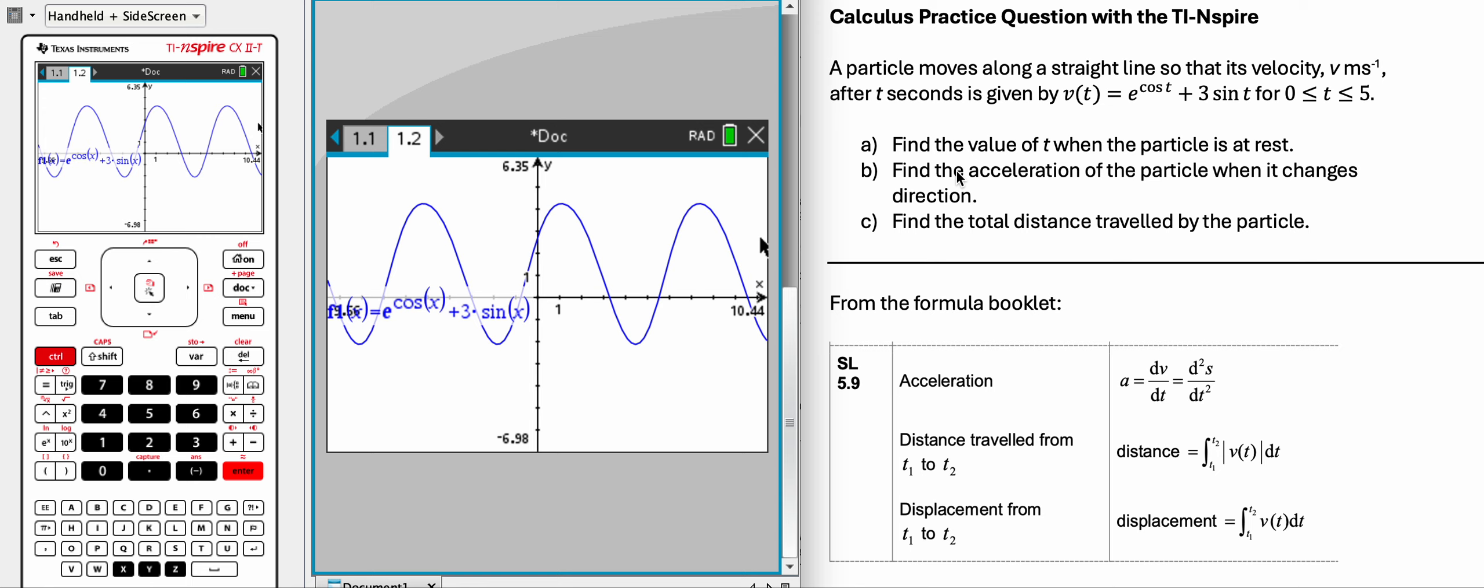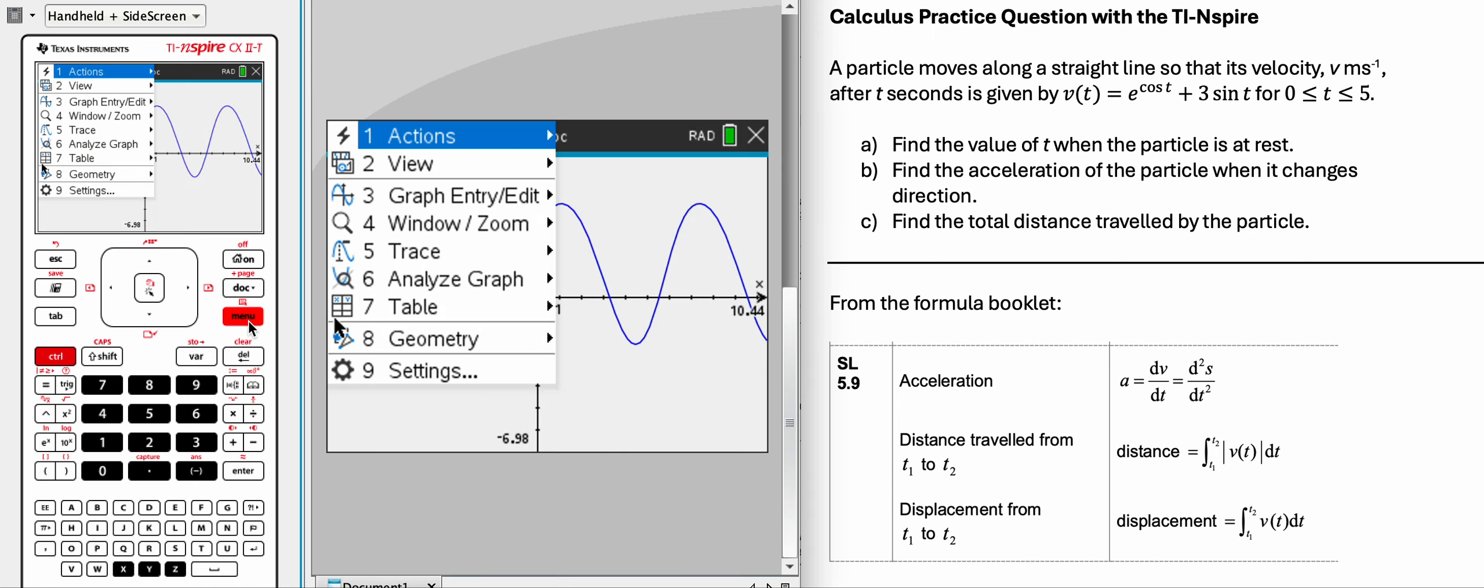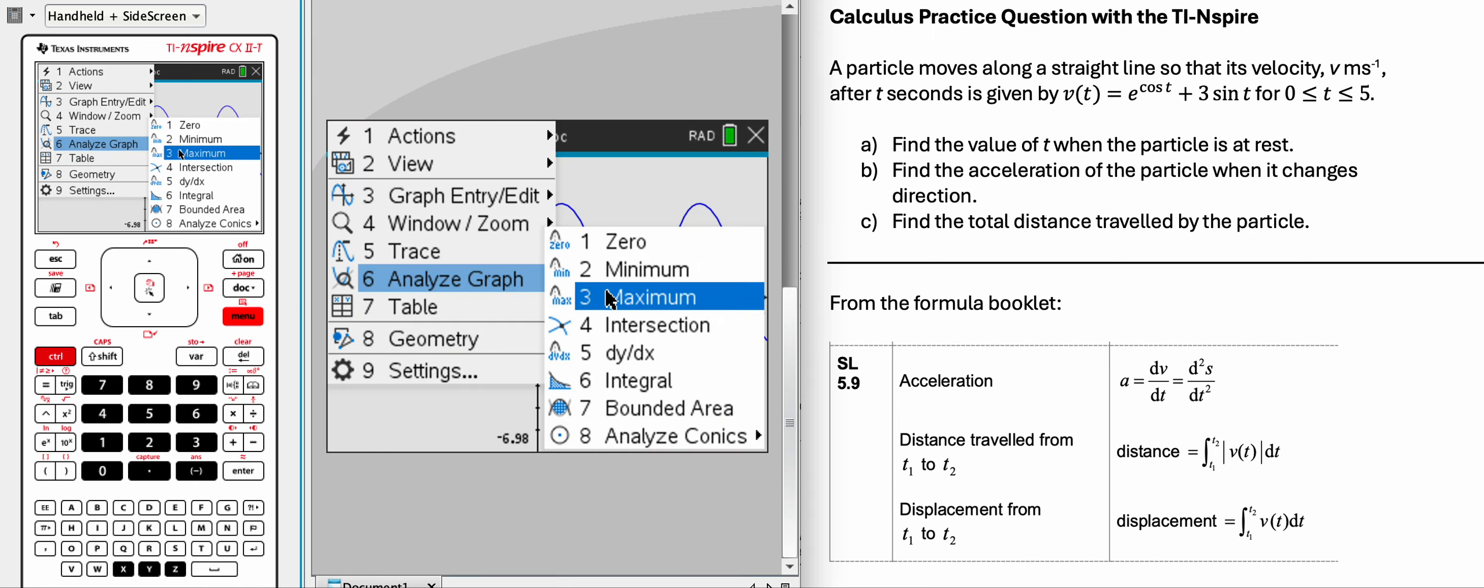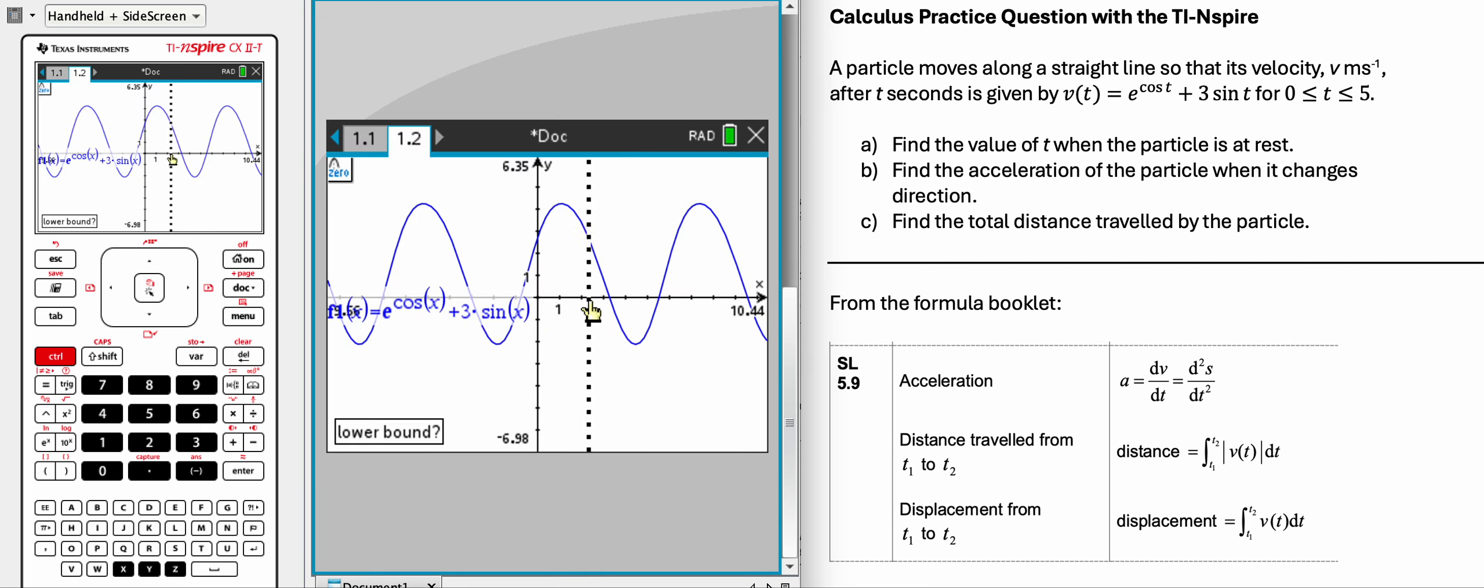So find the value of t when the particle is at rest, that means the velocity is 0, so we have to find this x-intercept right there, and we can do that by going to analyze graph, find the 0 of the function, from here to there, and it's 3.27.